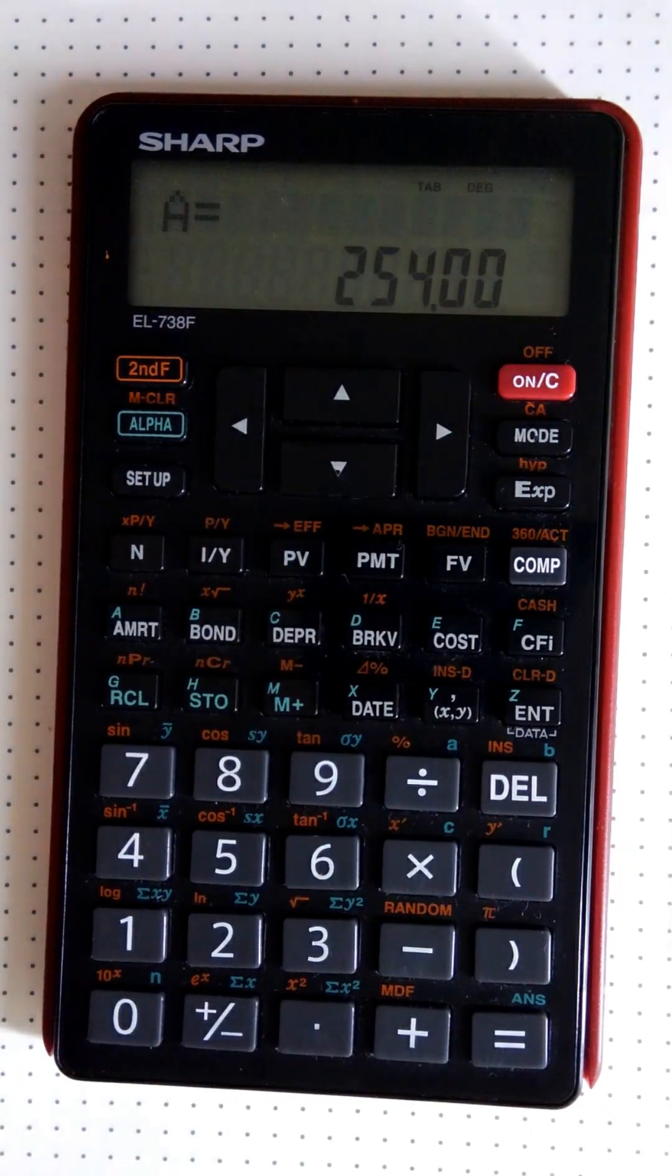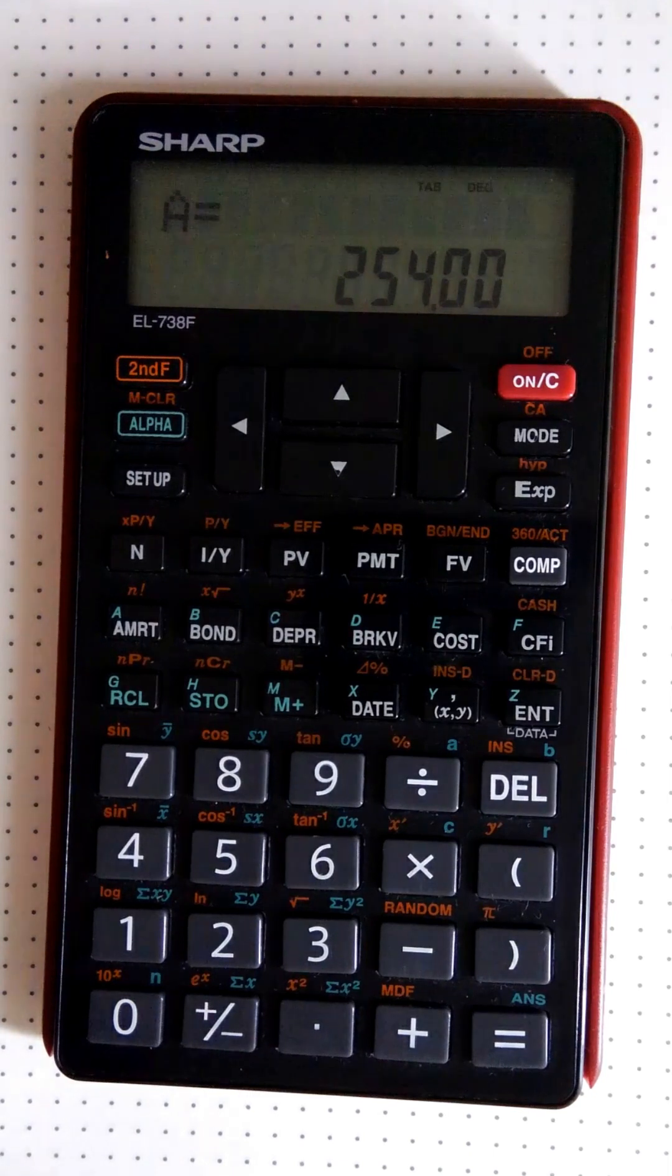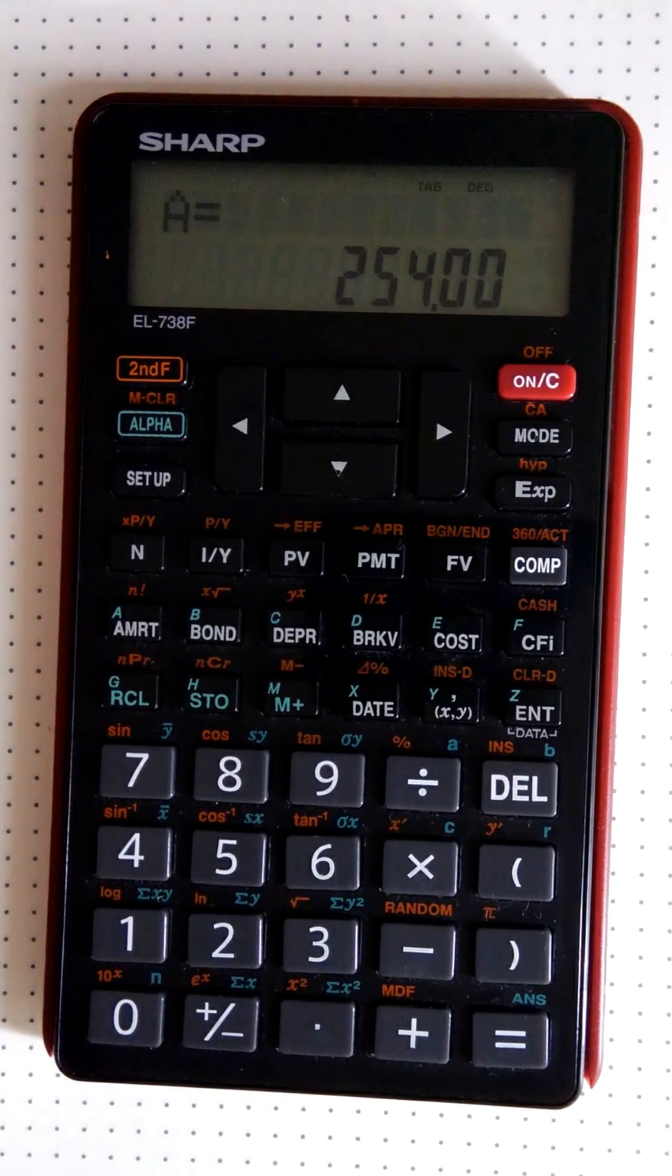So the A is still there in the background. It hasn't been cleared by using second function CA. So there are layers to it and different functions for different parts of the memory of your financial calculator.